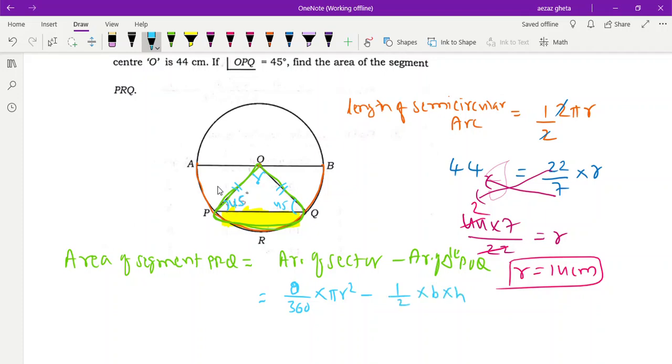This is 90 degrees. How? This is 45 degrees they given, so this also will be 45 because these two are radius. Angle opposite to equal sides are equal, so 45 plus 45 is 90.